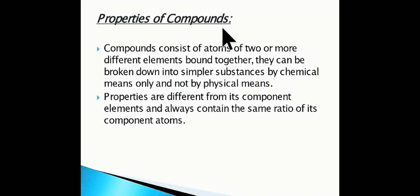Here are some properties of compounds. Compounds consist of atoms of two or more different elements bound together. They can be broken into simpler substances only by chemical means and not by physical means. Properties are different from its component elements and always contain the same ratio of its component atoms. For example, the property of water or H2O is different from the property of hydrogen and oxygen separately.